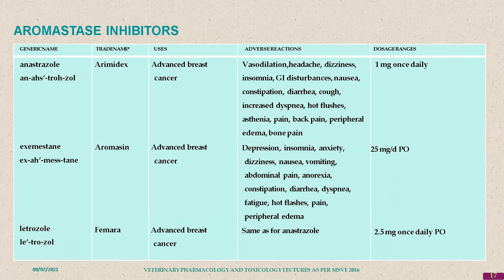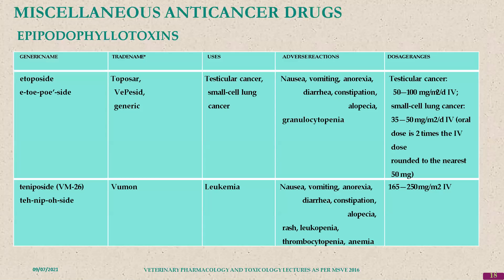Aromatase inhibitors are drugs which inhibit the enzyme aromatase. Examples include anastrozole, exemestane, and letrozole. All are aromatase inhibitors used in advanced breast cancers, with similar side effects like vasodilation and headache.